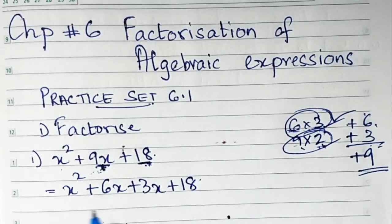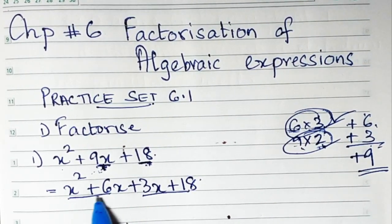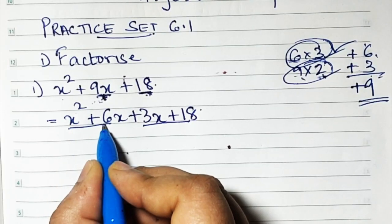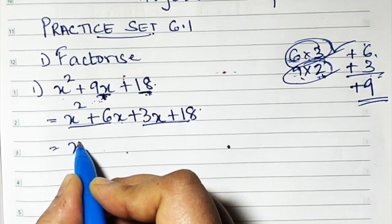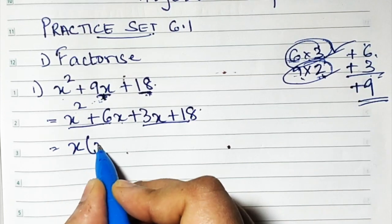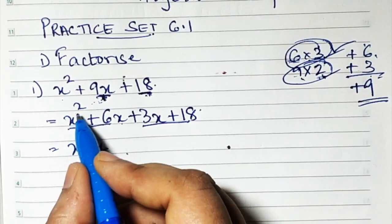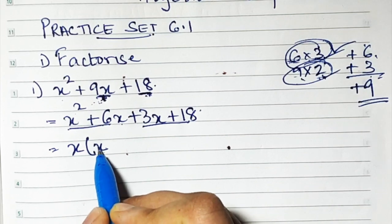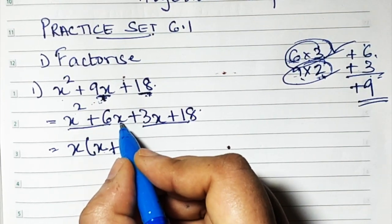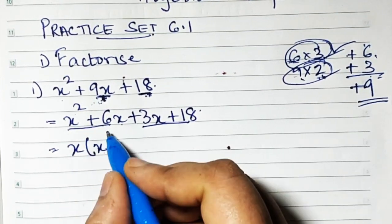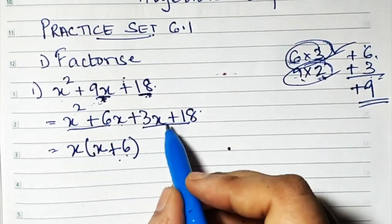So our second step is going to be x squared. I'll write 9x as 6x plus 3x plus 18. Now make two groups. Here what is common? Here you have x squared and here you have 6x, so x is common. Take x outside. One x has already gone out, so out of two, only one remains. Then plus sign, and this x has gone out, so 6 remains — x plus 6 remains inside.